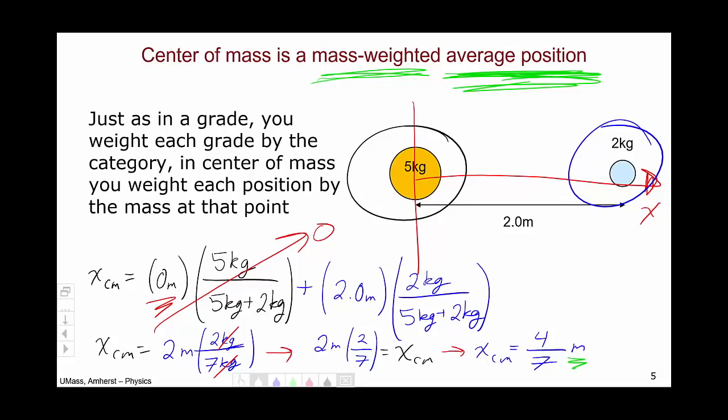If I plug this into a calculator, we can see that I get a numerical value of 0.57 meters, which means that the center of mass is somewhere here-ish. Much closer to the 5 kilogram object than to the 2 kilogram object.